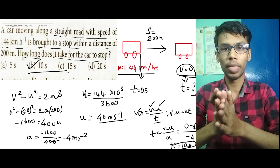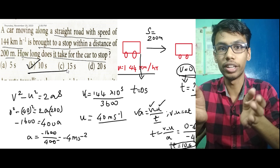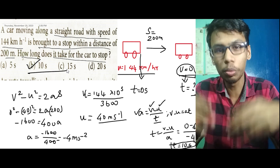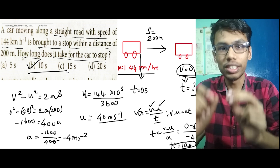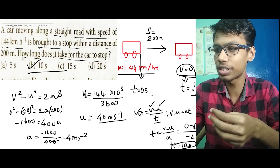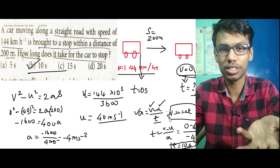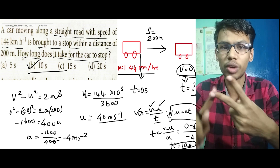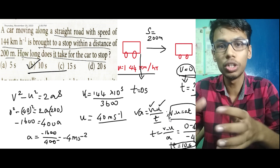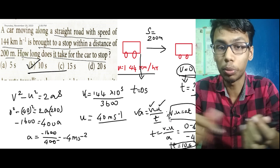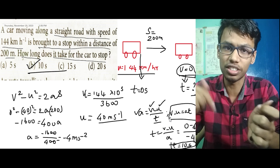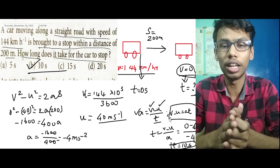The answer is option B — 10 seconds. To summarise: S equals 200 m, initial velocity is 144 km/h, final velocity is 0, and using the equations of motion we get T equals 10 seconds. We have three equations of motion: v minus u equals at, v squared minus u squared equals 2as, and s equals ut plus half at squared. I will see you in the next video. Thank you and bye.